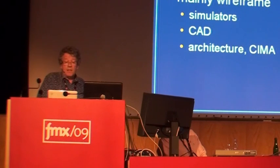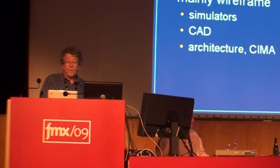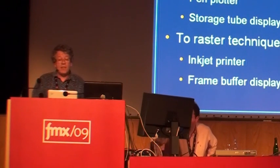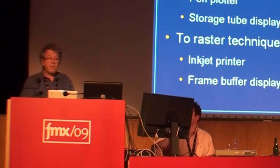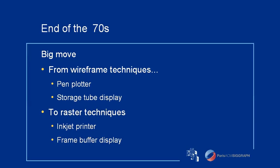Anyway, in the 70s, outside of labs, computer graphics is mainly wireframe because of a lack of computer power and image display. We found these wireframes mainly in three fields: simulators, computer design and architecture. At the end of the 70s, techniques moved from wireframes to raster. Besides the pen plotter, we got printers, so it was easier to make images and not only line drawings. And frame buffer displays became more affordable.